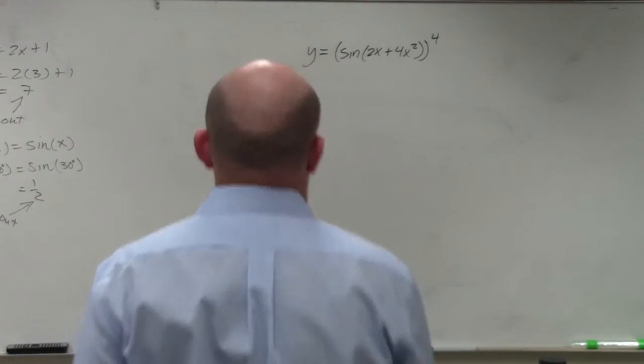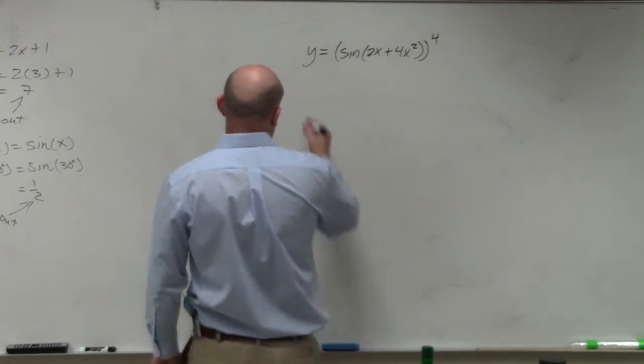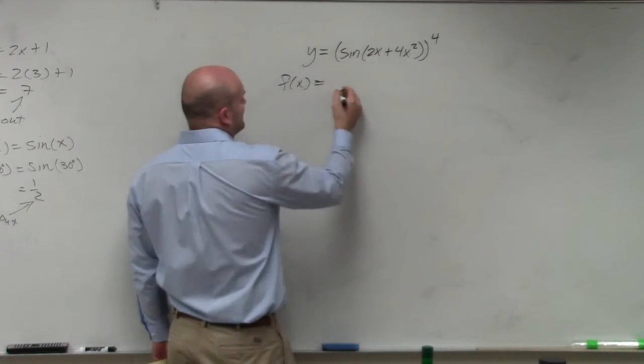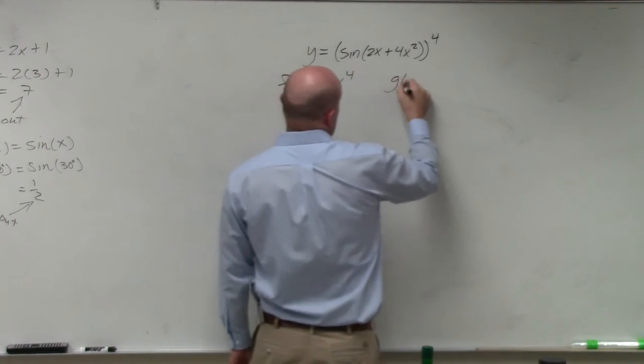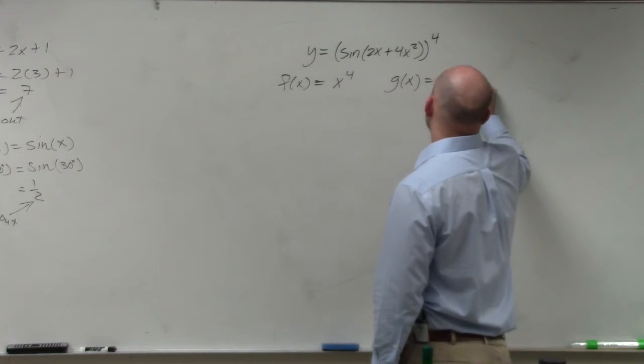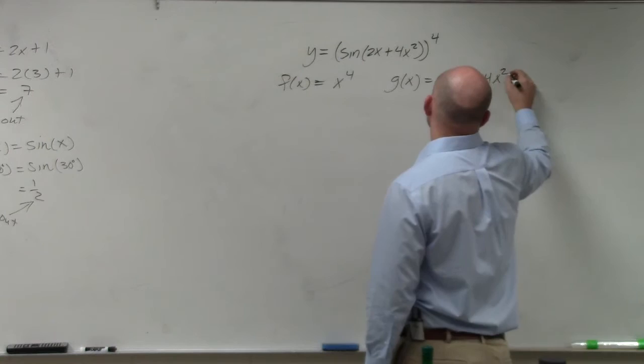Let's go and take a look at this one. So if we're going to go and take a look at this one, I can rewrite my f of x as x to the fourth. And I can rewrite my g of x as sine of 2x plus 4x squared.